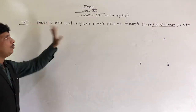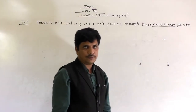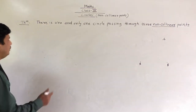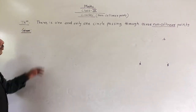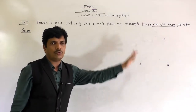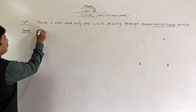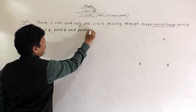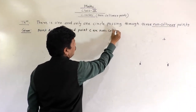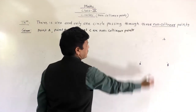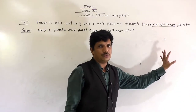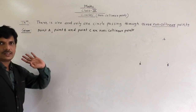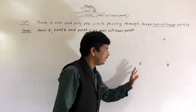There is one and only one circle passing through three non-collinear points. We can construct only one circle passing through all three points. Here, points A, B, and C are given as three non-collinear points, and we have to construct a circle passing through all three points — that is what we need to prove.